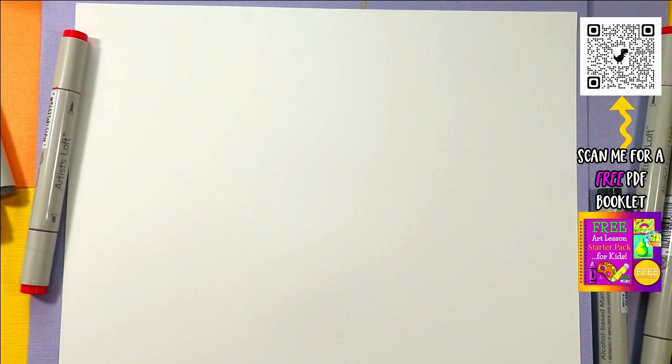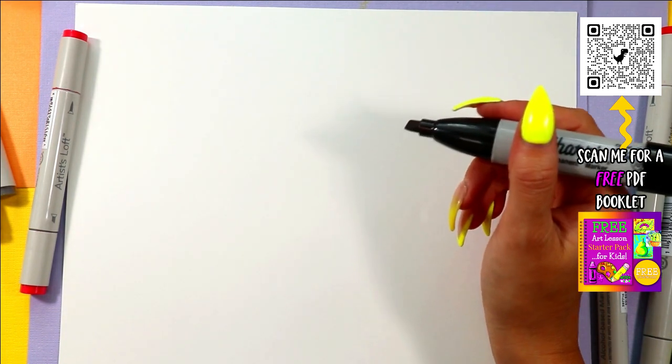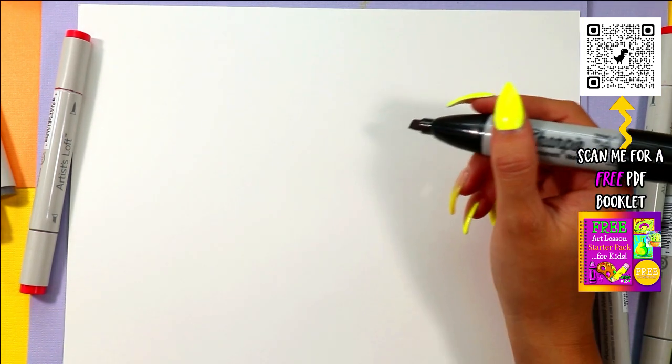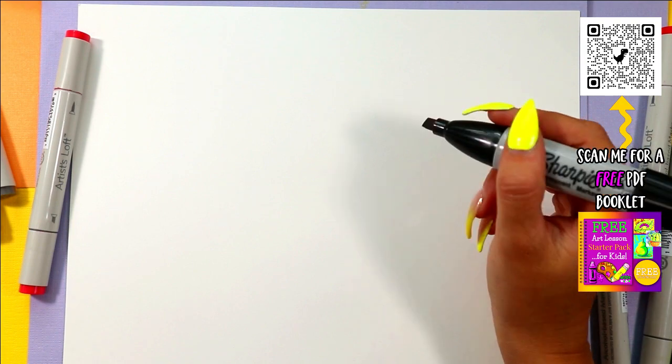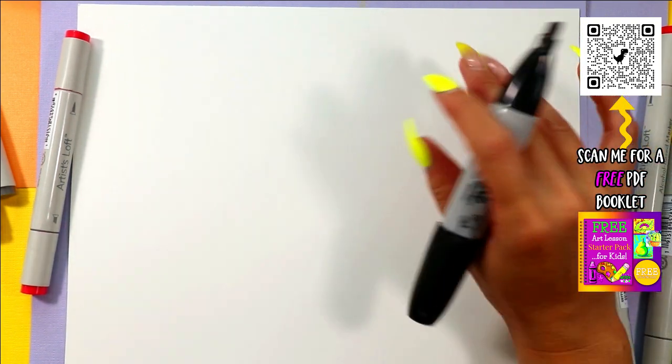Alright, welcome back. Today is day 20 and we're doing a starfish for the June Drawing Bonanza. June Drawing Bonanza is where I post a new drawing every single day for the entire month of June. That is 30 drawings in 30 days. My goodness guys, I'm so excited.